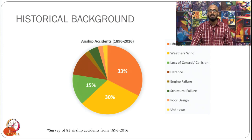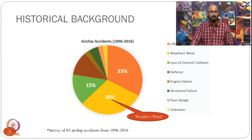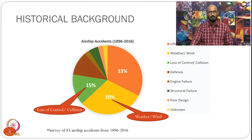That is the reason why most early accidents were lifting-gas related. Something that has persisted for a long time is weather or wind related, contributing about 30 percent of total airship accidents from 1896 to 2016. Another major component is loss of control or airship colliding into surrounding objects, which is also because airships are huge and difficult to maneuver, and very tricky to control.